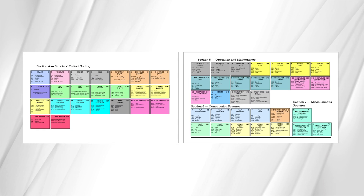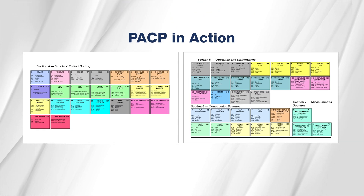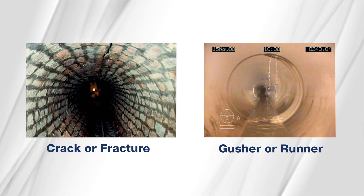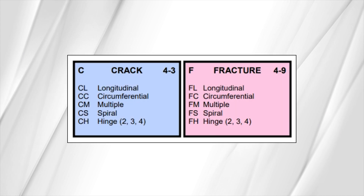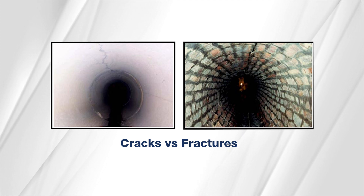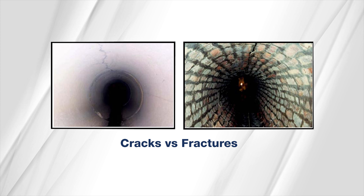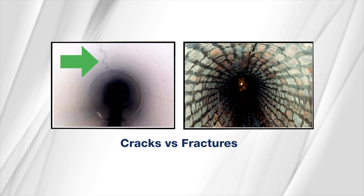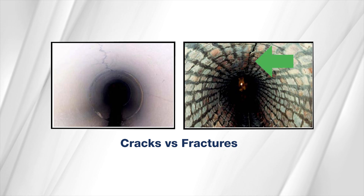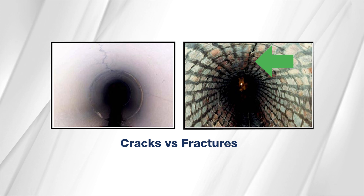Let's choose a few codes from each coding family to highlight so you can see PACP in action. Remember the quizzes from earlier in the video? From the structural defect code family, let's take a closer look at cracks versus fractures, broken versus whole, as well as surface damage. The distinction between the two is very important when coding. Fractures are visibly open, while cracks are not. The image on the left is a crack, which is not visibly open, and the image on the right is a fracture, which is visibly open.